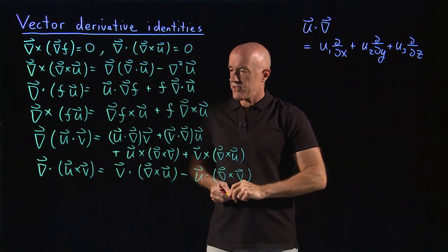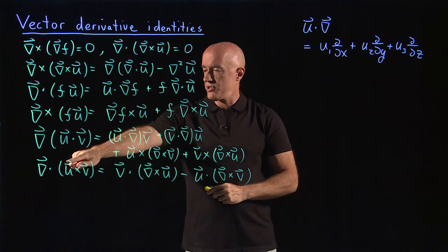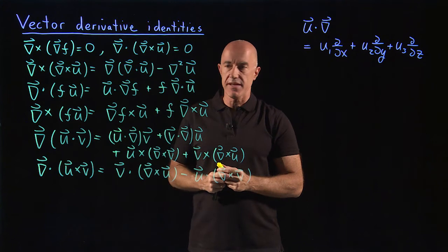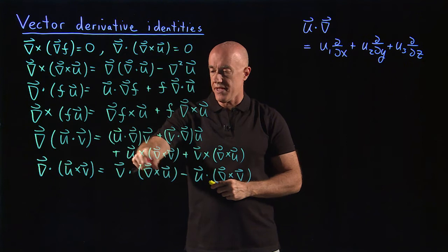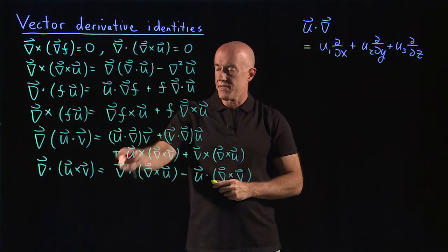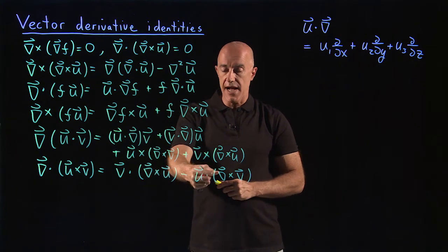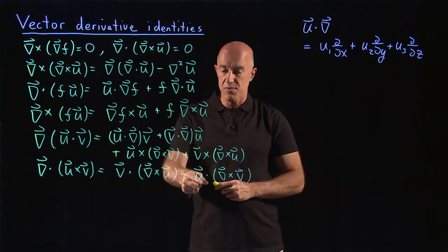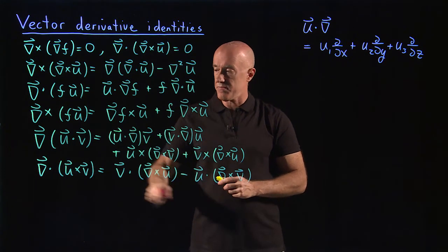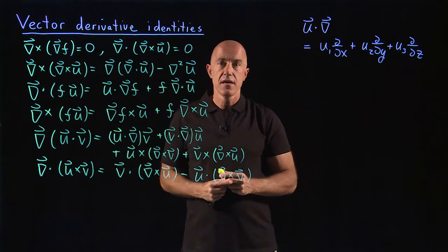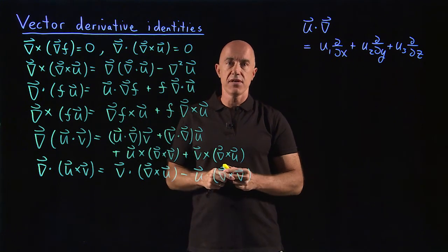The sixth vector identity is del dot u cross v — the divergence of the cross product between two vector fields, which is a scalar. That equals v dot del cross u, minus u dot del cross v. Notice there's a minus sign here because u and v are not symmetric in this expression, since u cross v equals minus v cross u.